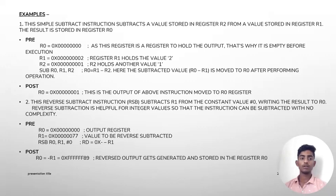An example of an arithmetic instruction. This simple subtract instruction subtracts a value stored in register R2 from a value stored in register R1. The result is stored in register R0. Pre: R0=0x0, R1=2, R2=1. SUB R0, R1, R2. Here the subtracted value is moved to R0 after performing the operation. Post: R0=1. This is the output moved to the R0 register.